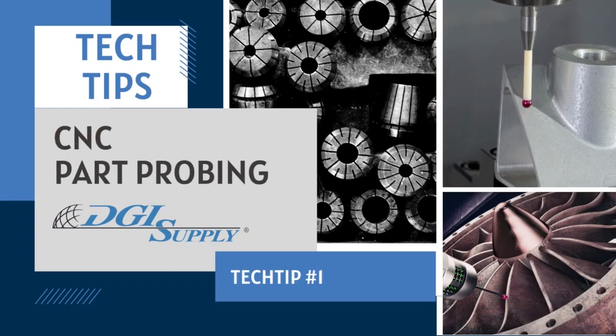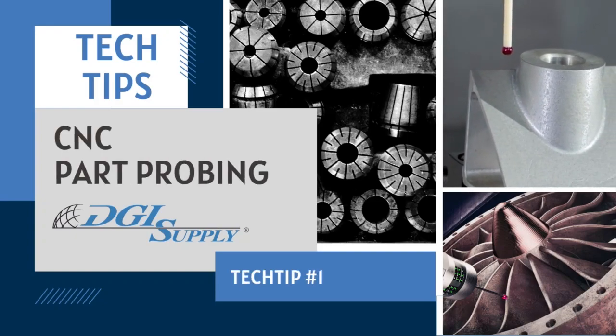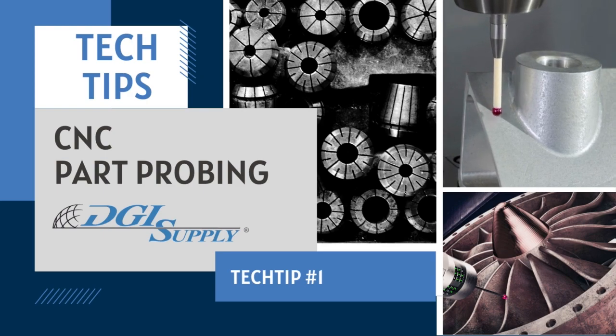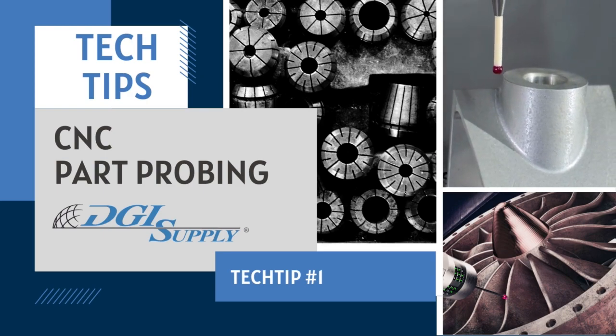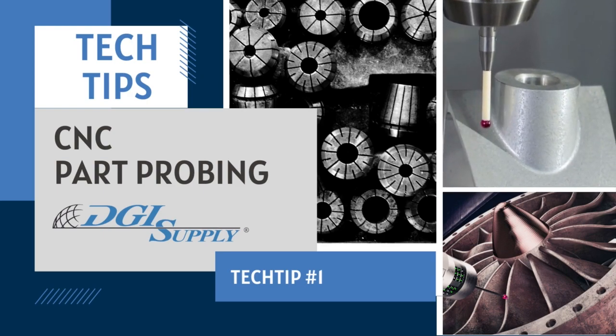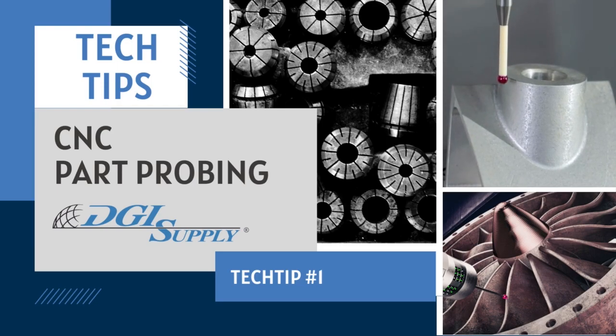Tech Tip 1: CNC Part Probing. CNC part probing is a process that is used to determine the location and orientation of a workpiece on a CNC machine.